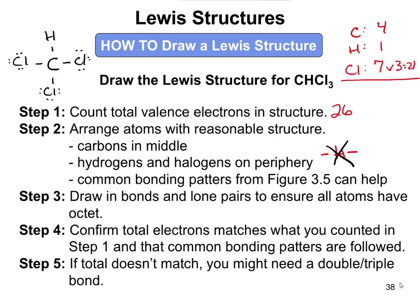Step four: confirm that the total number of electrons matches what we counted in step one. We should be able to count 26 electrons in the structure. Counting the bonds: two, four, six, eight. Then the lone pairs: ten, twelve, fourteen, sixteen, eighteen, twenty, twenty-two, twenty-four, twenty-six. It matches. Once it matches, we're done and we can say that's a good, valid structure.